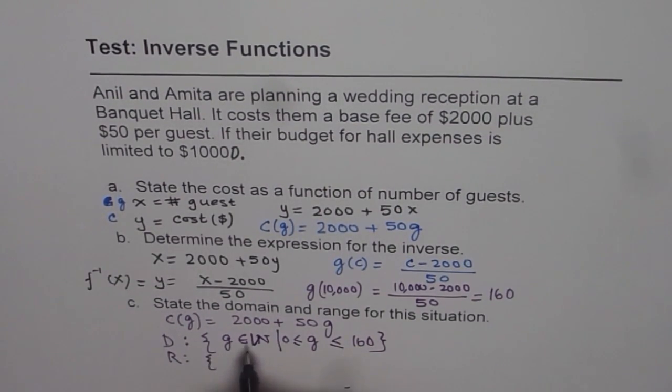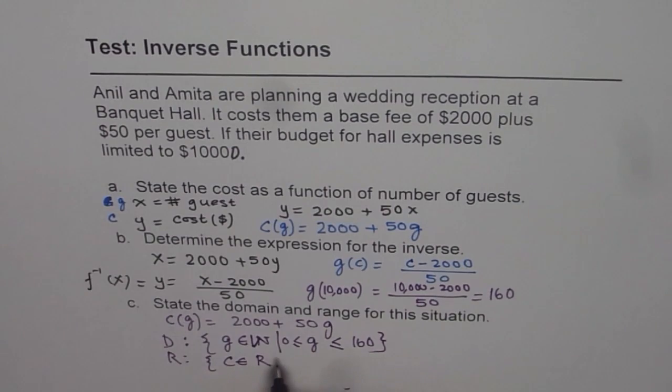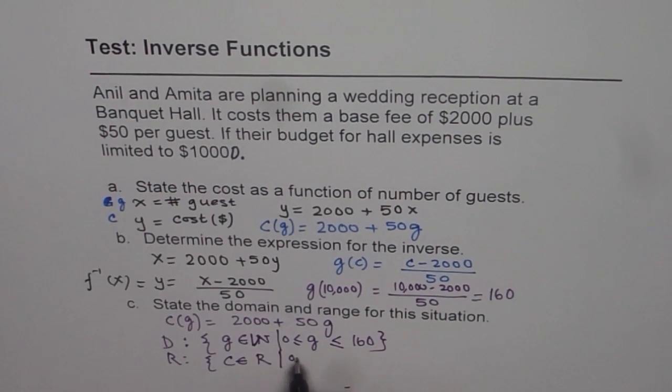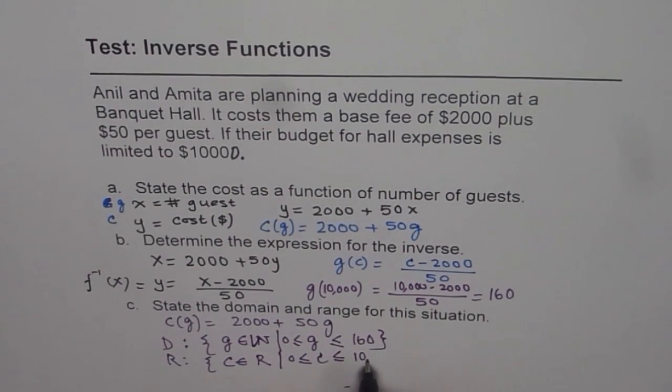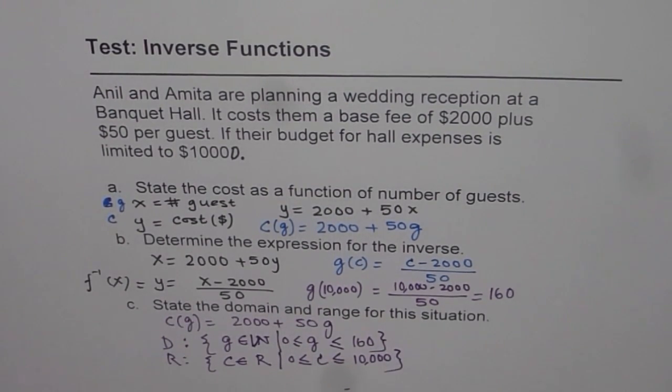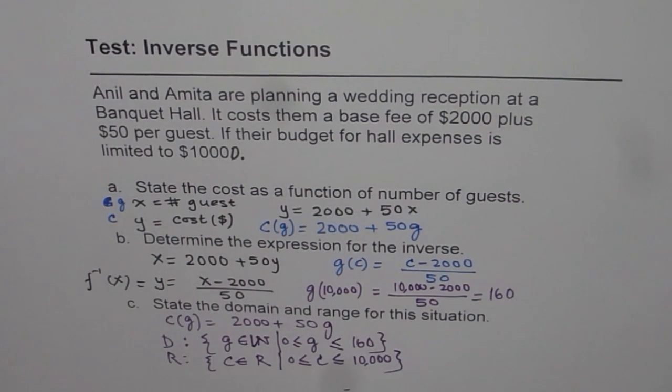And range for this function becomes the cost function, cost c. c belongs to, now this amount could be a real number. So it is any number which comes with calculations of this value, which is between 0 and the maximum is 10,000. c is less than or equal to 10,000. That is how we can get the range for this function.